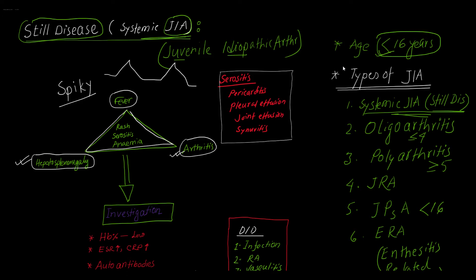When a patient less than 16 years comes to you with high-grade, spiky, prolonged fever, with arthritis, and you find hepatosplenomegaly, with these three findings you should suspect this could be Still's disease or Systemic JIA.